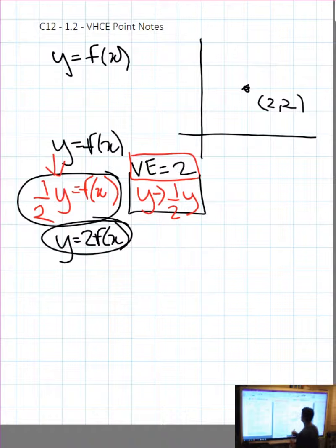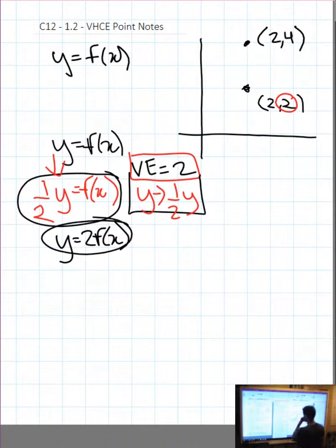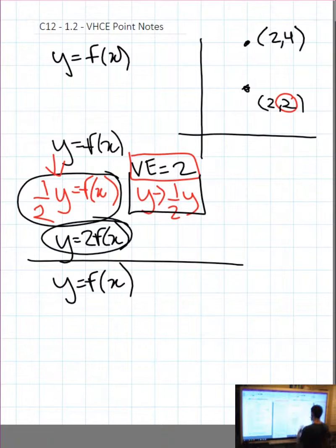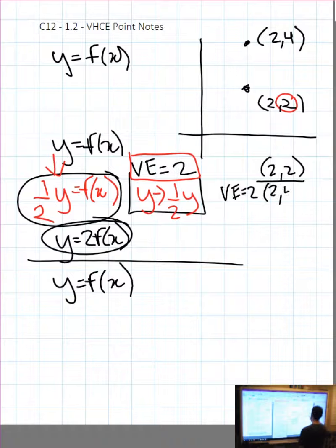So that is going to simply take the y values and multiply them by 2. If I have a y value of 2 and I multiply that by 2, that becomes 4, and now I have the point (2, 4). Let's write it down properly: we start with (2, 2), we do a vertical expansion equaling 2, which means we multiply the y values by 2, and we get the point (2, 4).